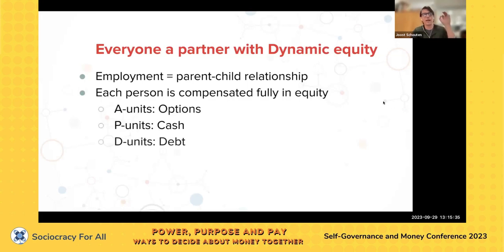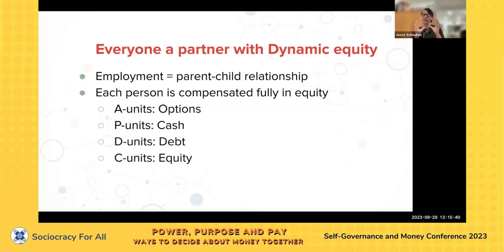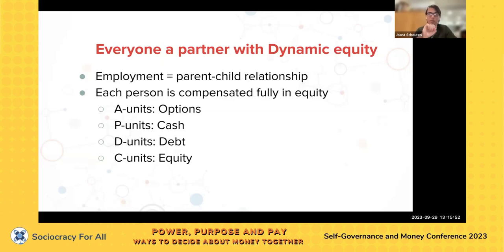So this is about what dynamic equity is — part of the for-purpose enterprise. It gets a bit detailed, but it's important to call out because it really informs how our compensation system works. I touched upon the elimination of employment, so how then are people compensated? Pretty much with different equity, with different share versions.